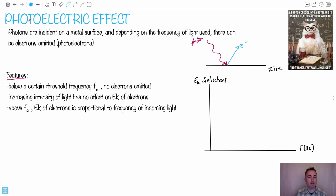Photons caused electrons to come out. That's why I like the term 'photoelectric effect' — the definition is in the name. 'Photo' means light, 'electric' means electron. So you have a photoelectron — that's how you know it's light and electricity.